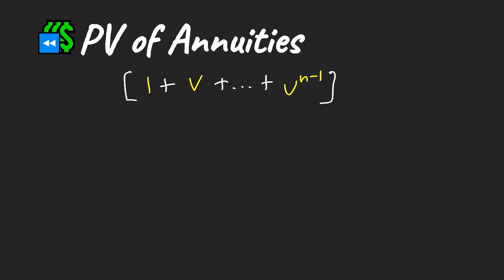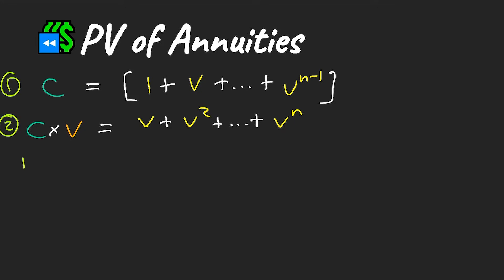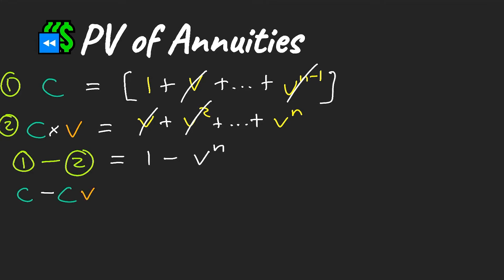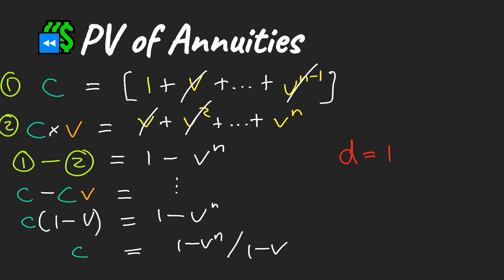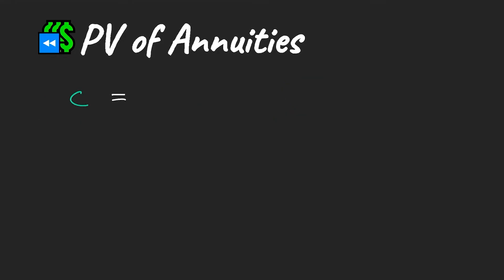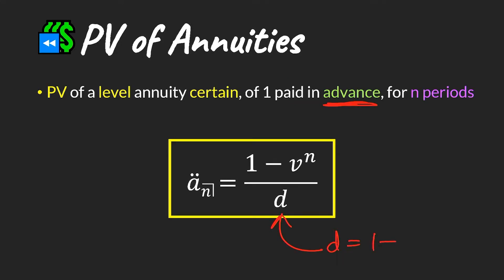With c defined, we apply a trick by multiplying c by v: the first term becomes v and the last becomes v^n. Subtracting line two from line one gives 1 - v^n on the right, and c×(1 - v) on the left. Rearranging gives c = (1 - v^n) / (1 - v). Since d = 1 - v, we substitute d into the denominator. This becomes our annuity-due formula — the present value of a level annuity certain of 1 paid in advance for n periods, equal to (1 - v^n) / d.